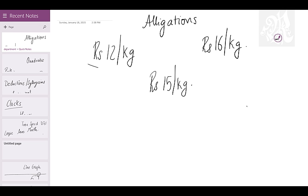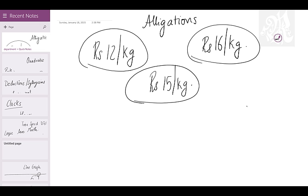You have to find out in what proportion and what ratio he mixed these two. What you do is write one quantity on one side, the other quantity on the other side, and the mixture in the centre. Then just subtract: 16 minus 15 is 1, and 15 minus 12 is 3. That's the ratio — 1 is to 3. Done.